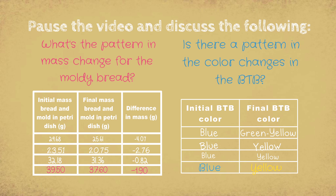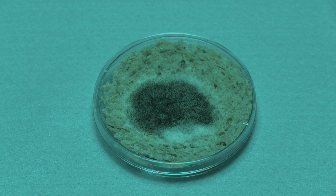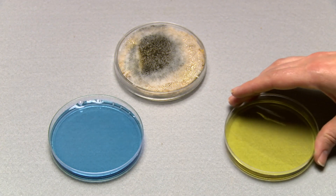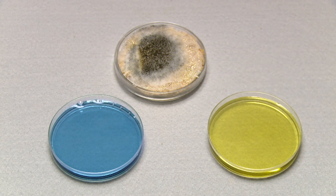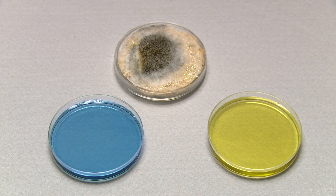What's the pattern in mass change for all the samples of moldy bread? And is there a pattern in the color changes in the BtB? Pause the video and discuss. Did a loss in mass match your prediction? It's funny that the mold grew, but the total mass of the bread and mold went down — so where did that mass go? And the change in BtB color from blue to yellow means that there was a gain in the concentration of carbon dioxide. Where did the carbon dioxide come from? And is there any evidence of an energy change?